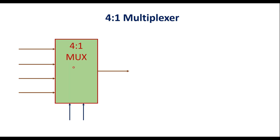This is the block diagram of the 4-to-1 multiplexer. As we know, 4 indicates the number of input lines and 1 indicates the number of output lines. Since 4 can be represented as 2 raised to the power 2, a 4-to-1 multiplexer has 2 select lines. This power indicates the number of select lines.